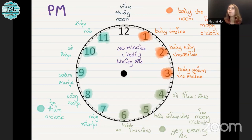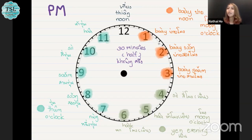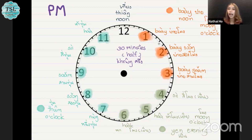From 4 PM, you can see the color on the screen changes to green. Thai people take this as the evening time. So we have the word เย็น — เย็น is the part of the day for evening. From 4 PM, you can say สี่โมง or สี่โมงเย็น. 5 PM: ห้าโมง or ห้าโมงเย็น. 6 PM: หกโมง or หกโมงเย็น.